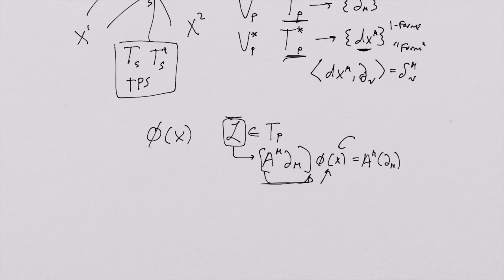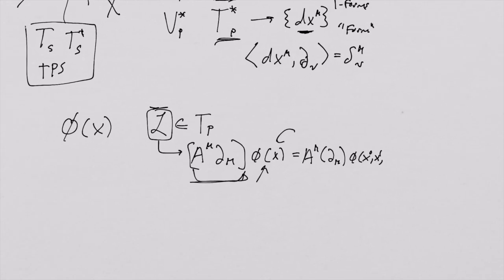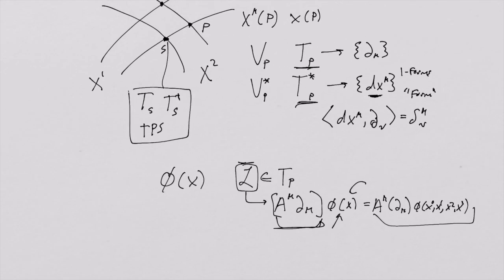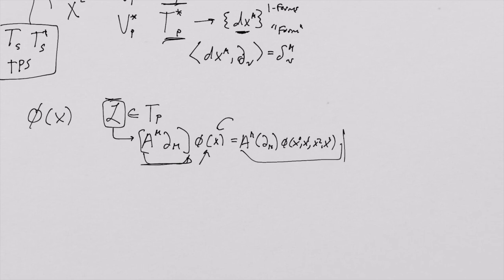Del-mu acting on phi of x0, x1, x2, x3 gives a directional derivative. The reason this works for every separate point in spacetime is we evaluate it at each relevant point. Since we're dealing with the tangent space at p, we evaluate this directional derivative at p.